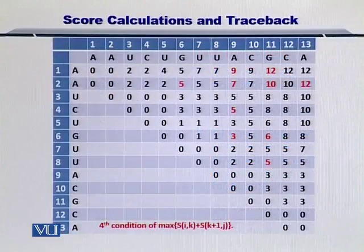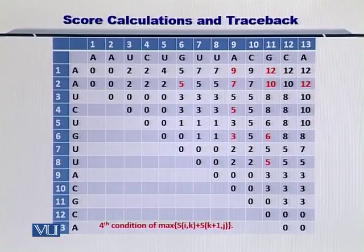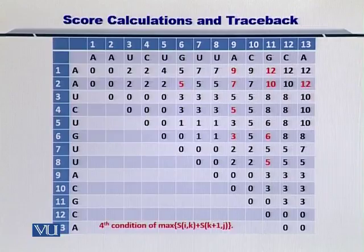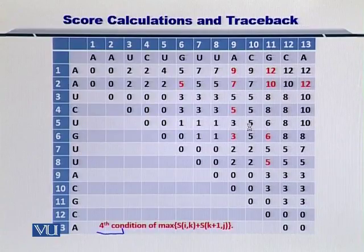As you can see in this matrix, we have filled up all the positions with scores that resulted by looking at the left bottom diagonal as well as the bottom column and the left row. The text in red shows contributions that have come from the fourth condition.